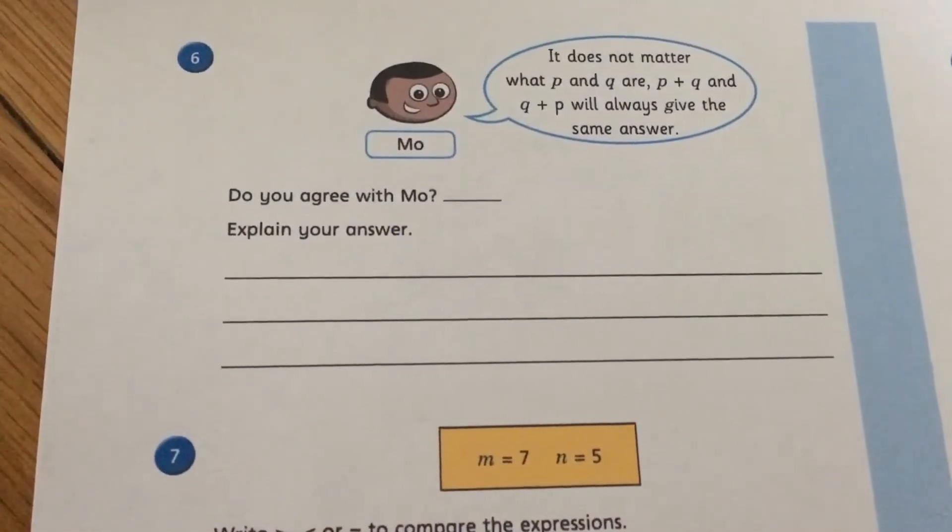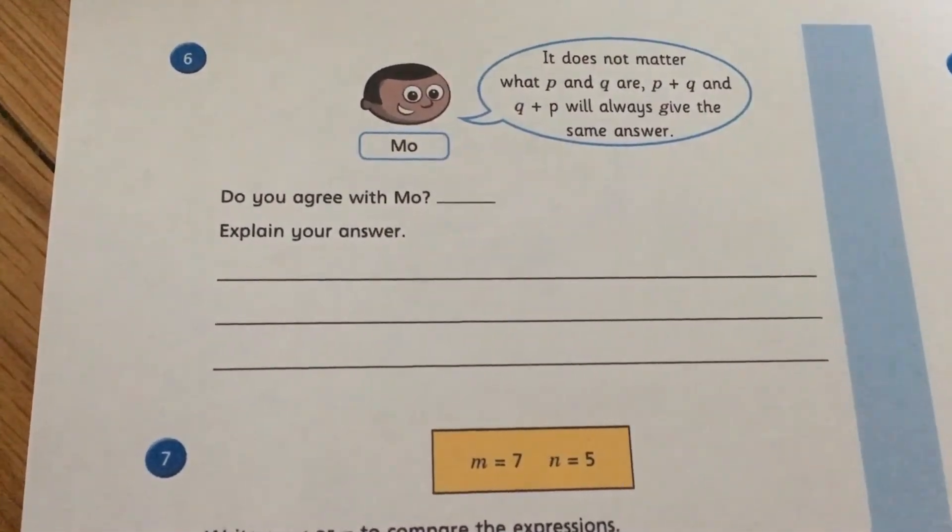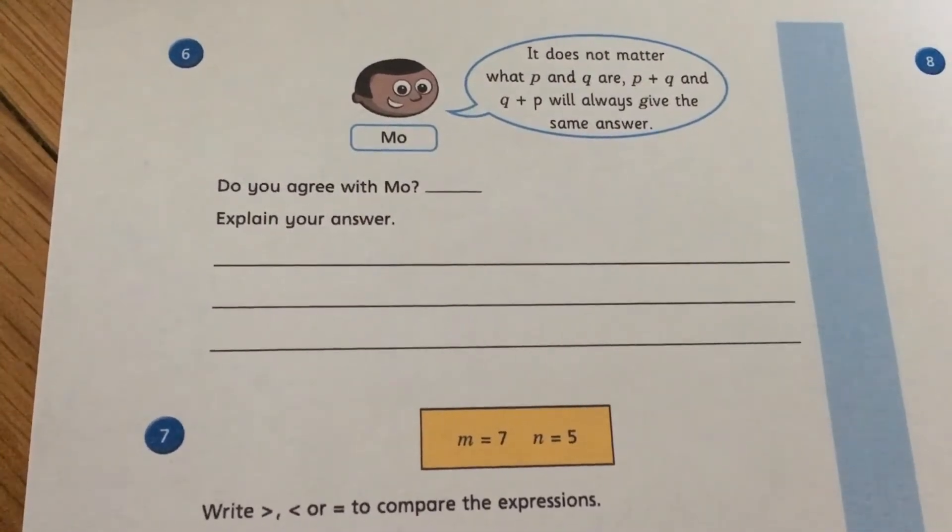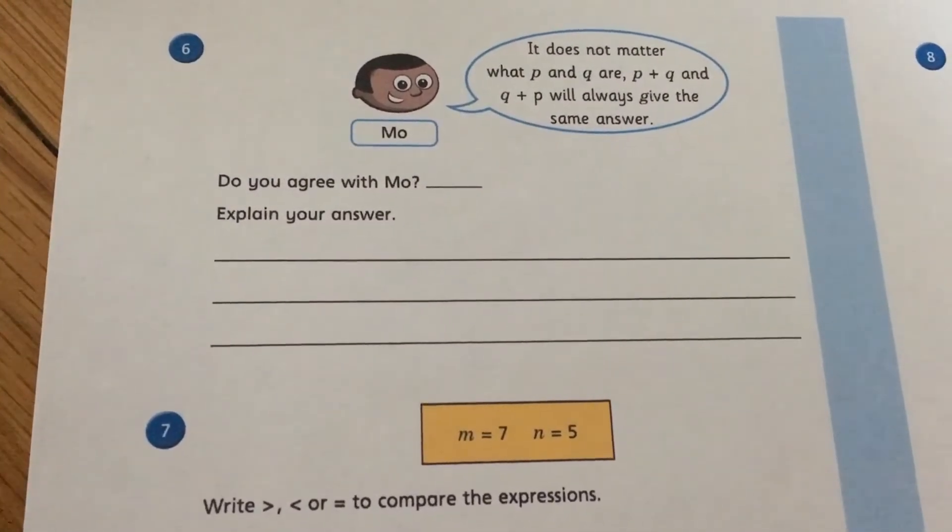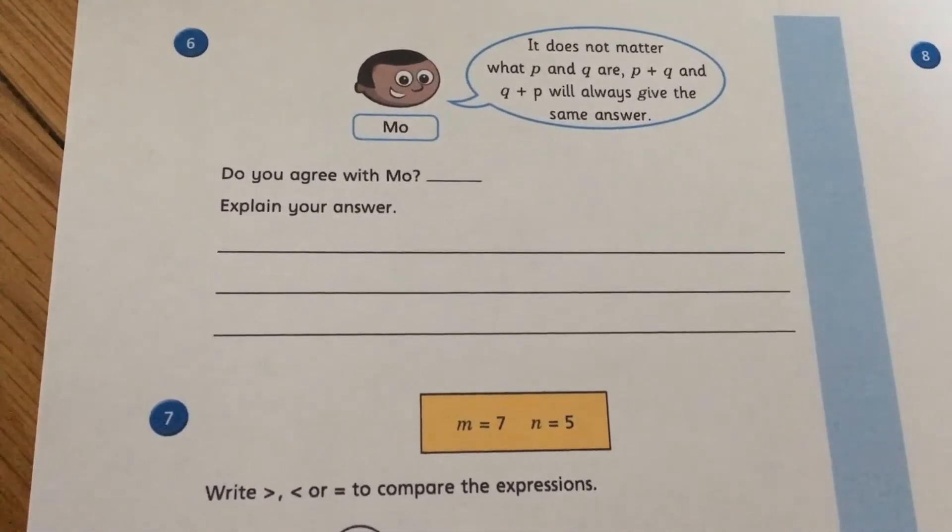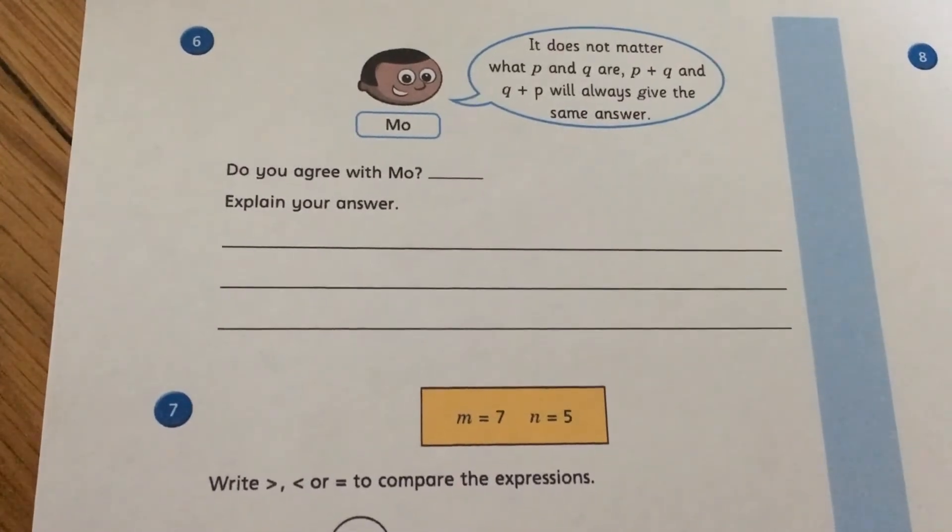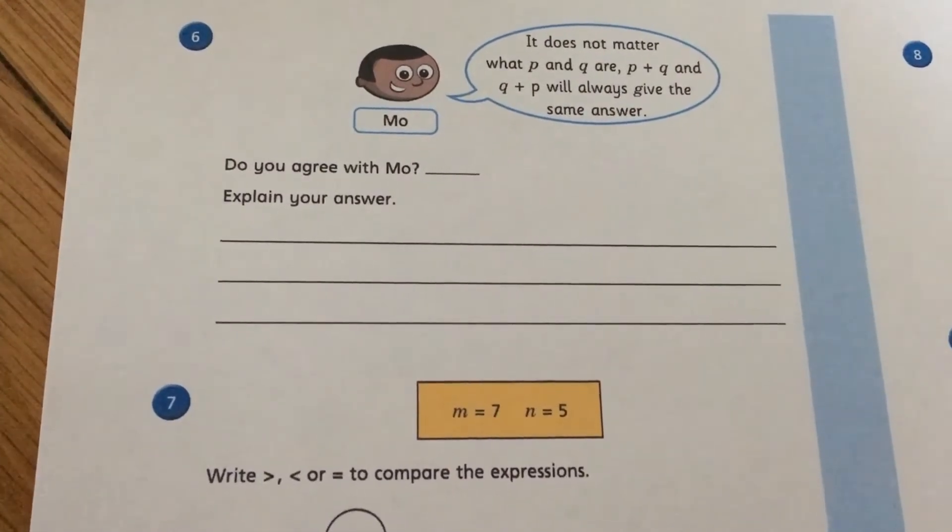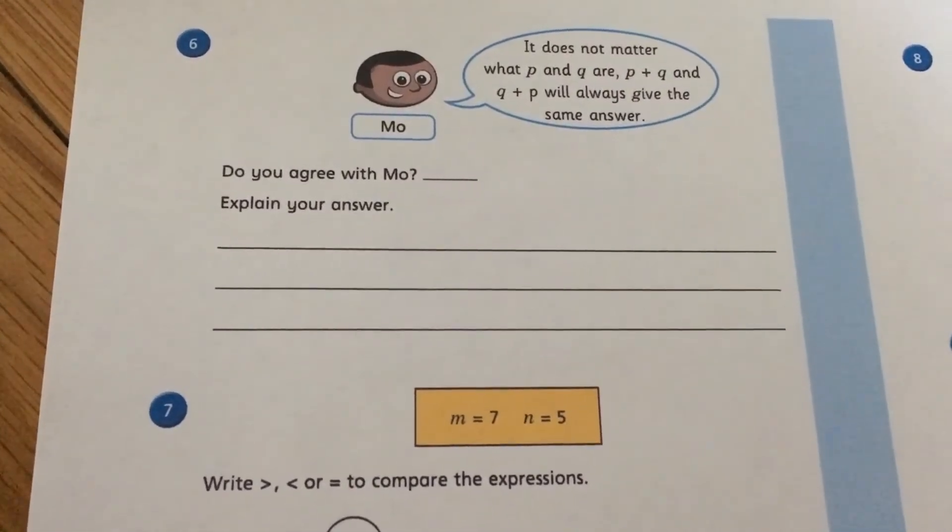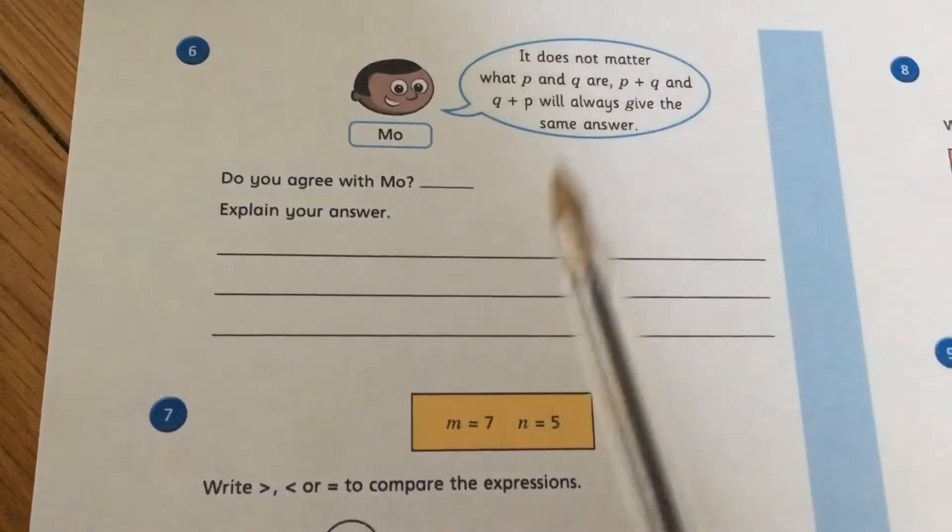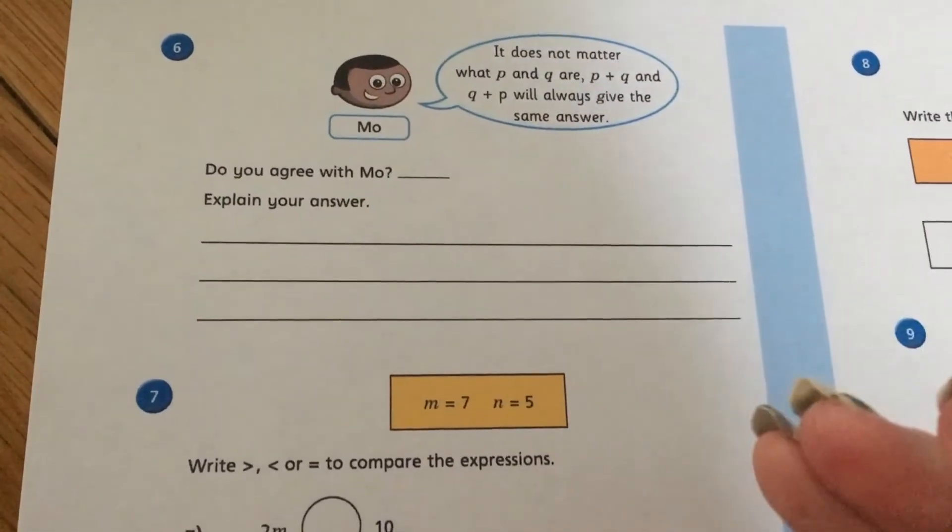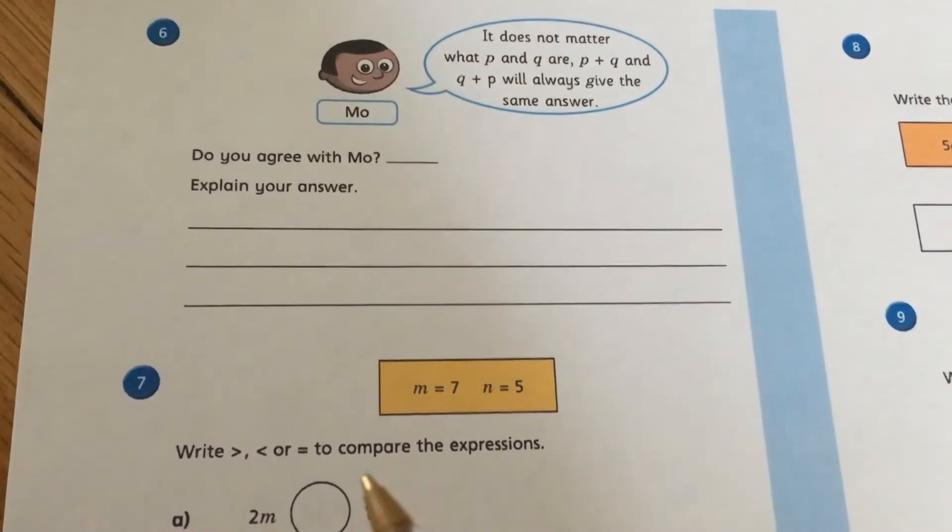The next question I'm going to go through is question 6, only because I'm hopeful that we would all be confident as to why Mo is correct. So he says it does not matter what P and Q are, P plus Q and Q plus P will always be the same answer. I'm hopeful everybody has said yes because we've talked about this before. It's because the idea that these are commutative, addition can be done in any order, thinking about our family of four.